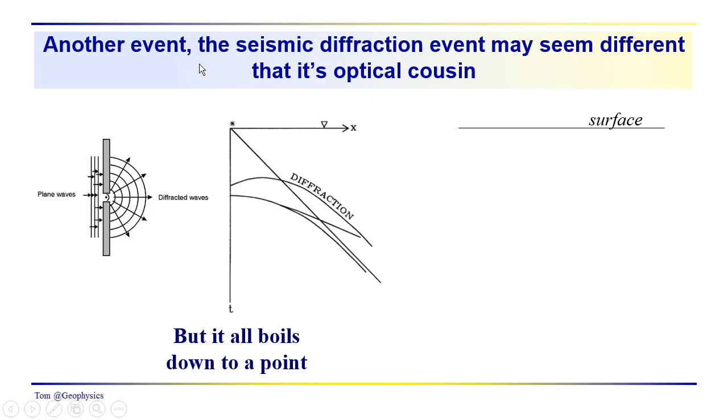So we have these different events that we just talked about. We can see the direct arrival, the critical refraction, the reflection asymptotic to the direct arrival for the single-layer case. We also have a funny event in here, which is referred to as a diffraction.